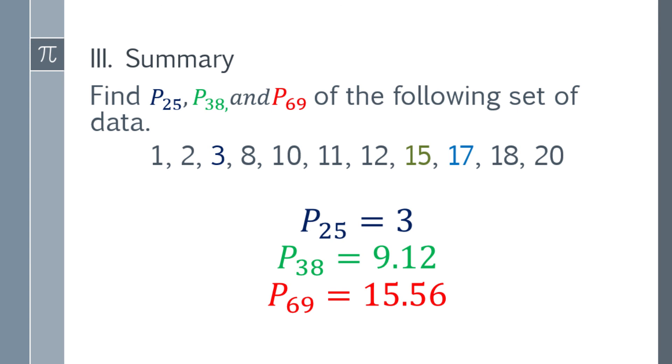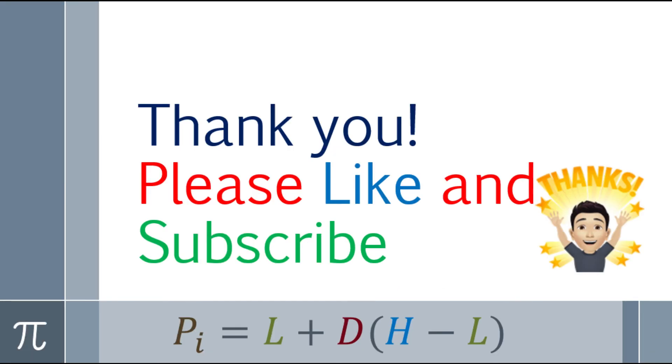Here is the summary of the answers. P25 natin, percentile 25, or 25th percentile, that will be 3. Ang 38th percentile natin dito ay 9.12. And P sub 69, that will be 15.56. And that's the end of the lesson on how to find the percentiles for ungrouped data.